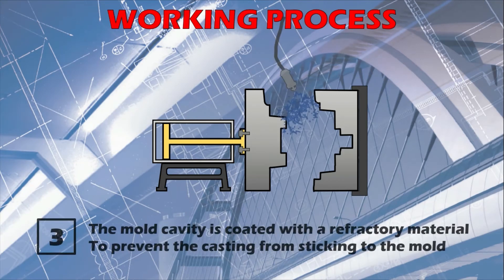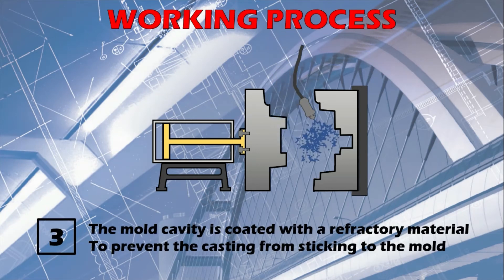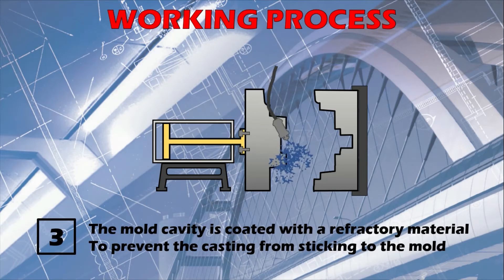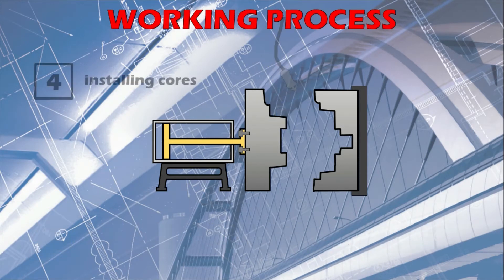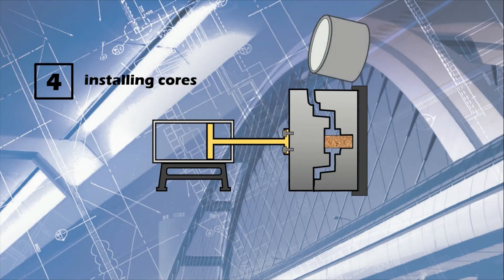The mold cavity is then coated with a refractory material or a mold wash, which prevents the casting from sticking to the mold and prolongs the mold life. Cores are used to produce internal cavities or hollow shapes. Two types of cores can be used as per the requirement of the part to be produced: sand cores and metal cores.